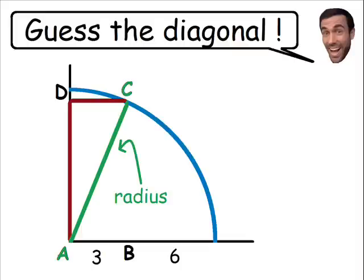And the radius of the circle has actually been given to us. We can find this by adding the bottom side of the circle, 3 plus 6. So we know the radius of the circle is equal to 9.